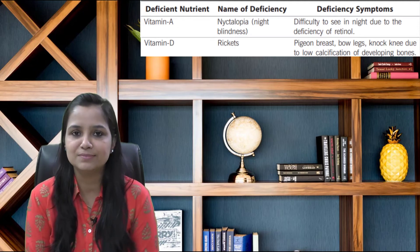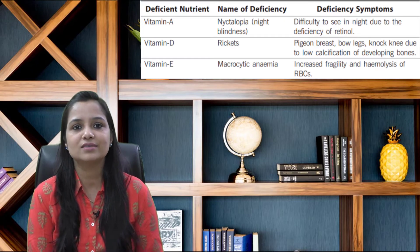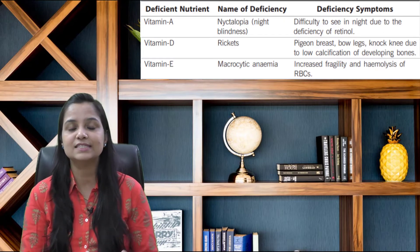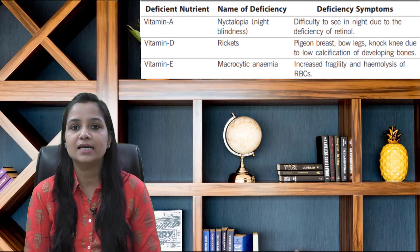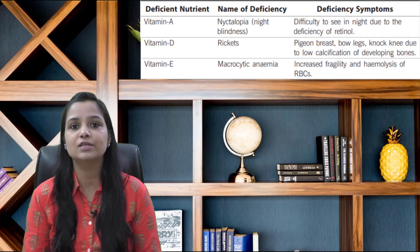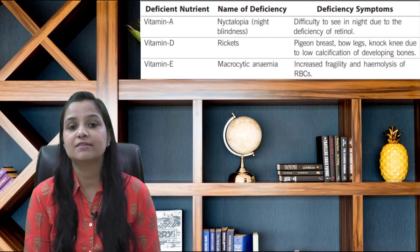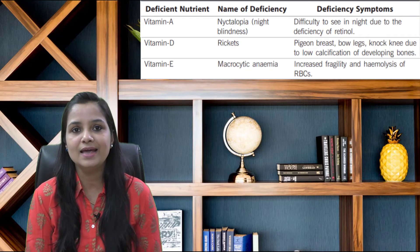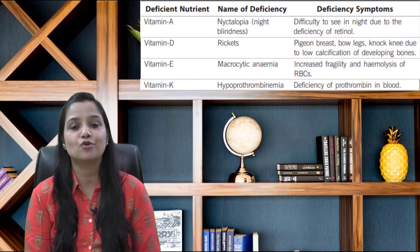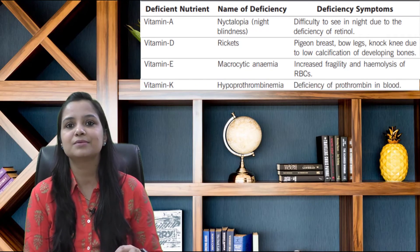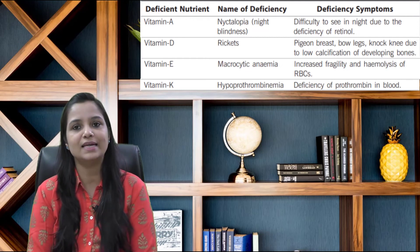The third one is vitamin E. Its deficiency causes macrocytic anemia, and its symptoms are increased fragility and hemolysis of RBCs. After that, vitamin K — its deficiency causes hypoprothrombinemia, and its symptom is deficiency of prothrombin in blood.